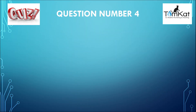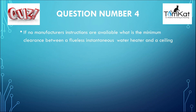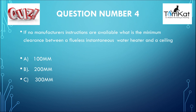Question number four: If no manufacturer's instructions are available, what is the minimum clearance between a flueless instantaneous water heater and a ceiling? Is it A, 100 millimetres? Is it B, 200 millimetres? Or finally, is it C, 300 millimetres? That is the end of question number four.